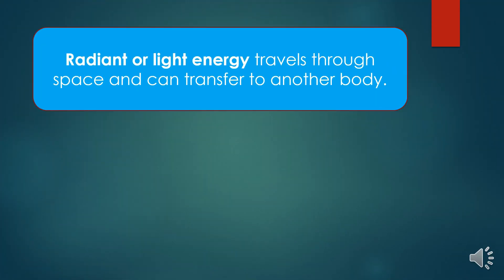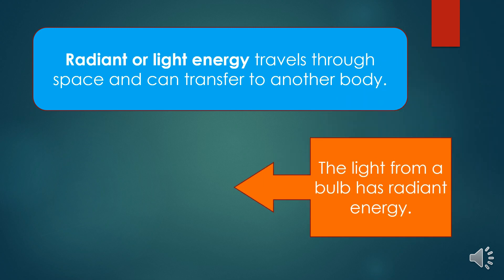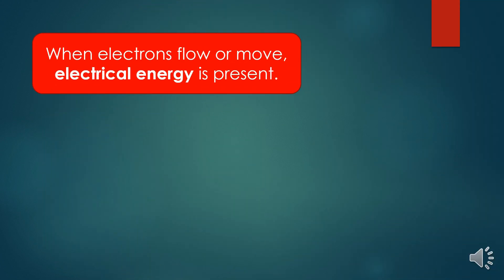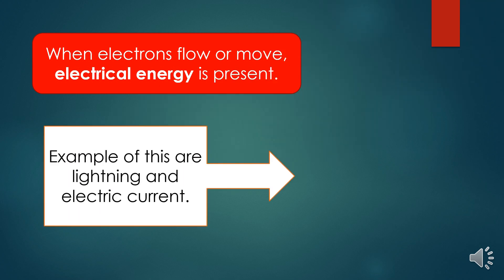Radiant or light energy travels through space and can transfer to another body. The light bulb has radiant energy. When electrons flow or move, electrical energy is present. Examples of this are lightning and electric current.